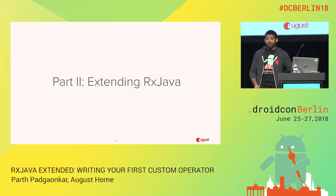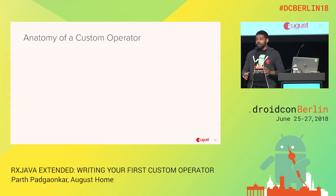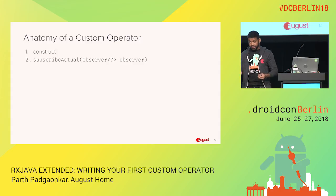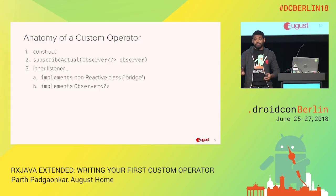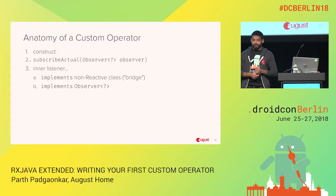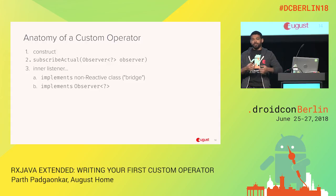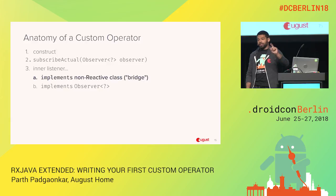Now for the interesting part — how to do interesting things using RxJava. A custom operator is actually not that scary. Looking inside the RxJava sources, there's not that much going on for the basic operators. We've got a constructor, we've got subscribeActual — which is what happens at the time of subscription when you call .subscribe — and we have an inner listener. There are two kinds: a bridge, for turning a click listener into a reactive stream, and an intermediate operator, for when you want custom logic like a special kind of retry.